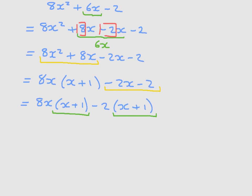We can now write our final step as 8x, which I get here, minus 2, which I'm getting there, in parentheses, times x plus 1. And there we go. We have just factored this quadratic by splitting the middle term.